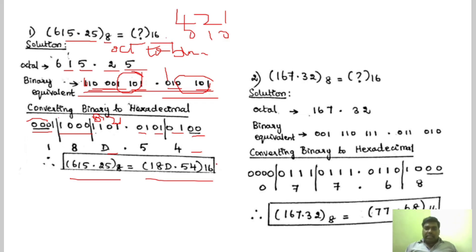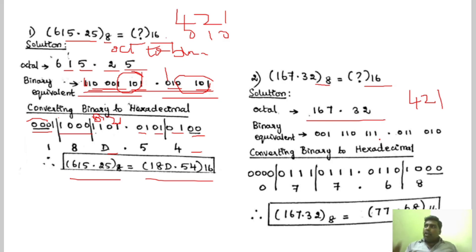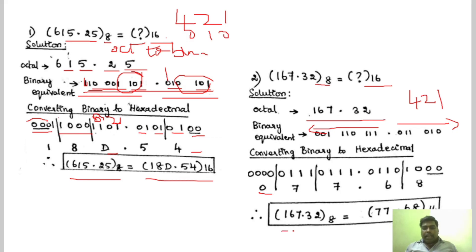Similarly, we will see the next problem with the same steps. You have to convert the octal to hexadecimal. The first step is to convert the octal to binary, writing the binary equivalent using the 421 code. Then I group this into 4 bits to convert it to hexadecimal, starting the integer part from LSB to MSB, and fractional part from MSB to LSB, adding zeros if needed. The corresponding hexadecimal number for this octal number is 77.68.